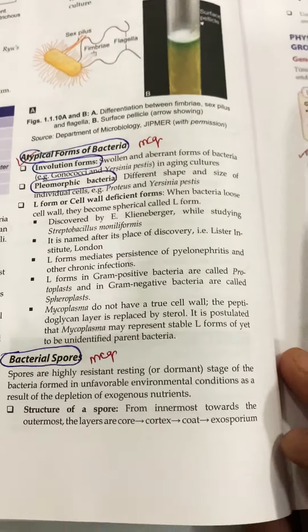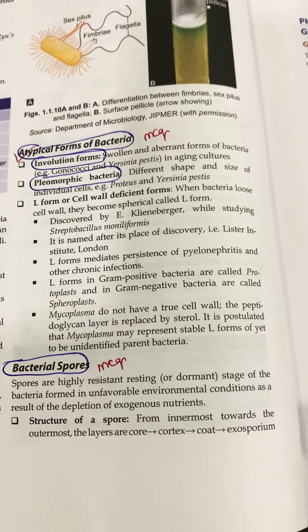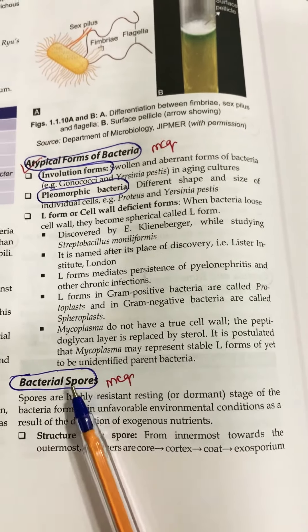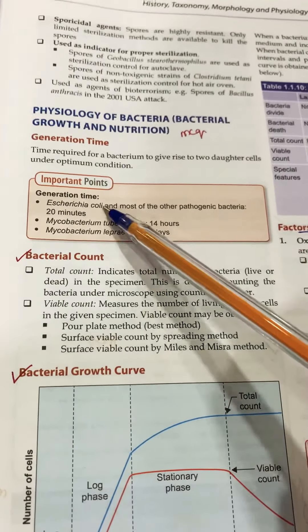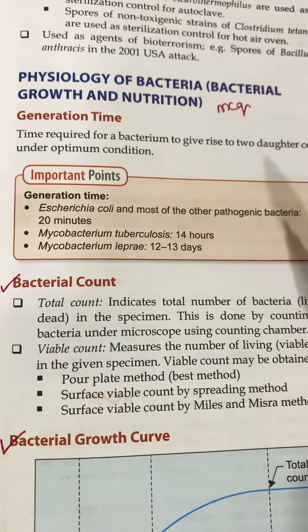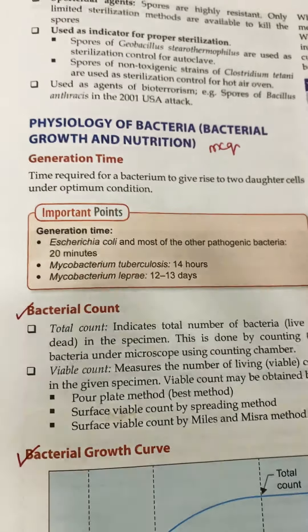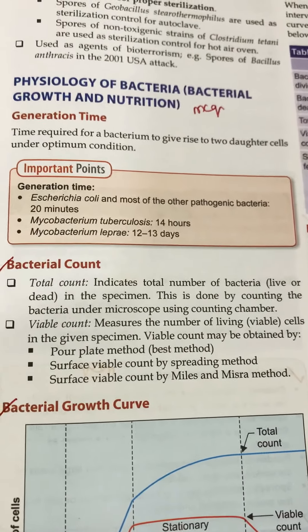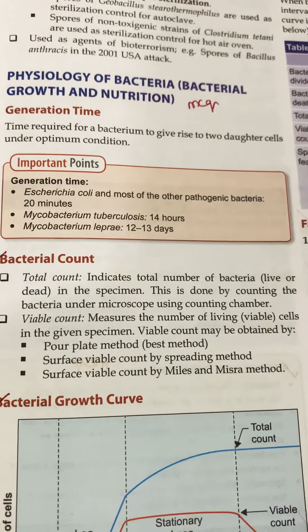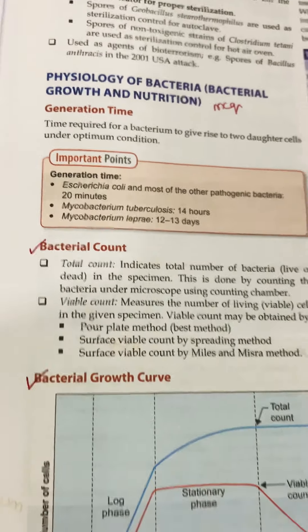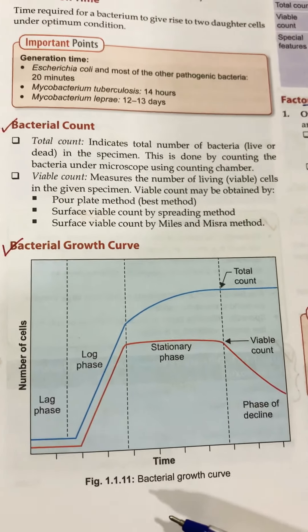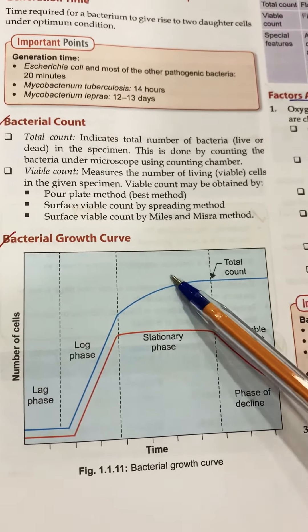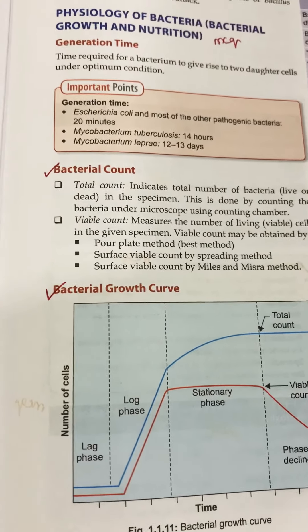Moving on to bacterial spores — a very important topic that cannot be missed. Learn it thoroughly; it should be on your fingertips. Then comes generation time — there is an important table here; you can take a screenshot even if you don't want to buy the book. Then comes the bacterial growth curve, which is also an important diagram mentioned in your textbook.